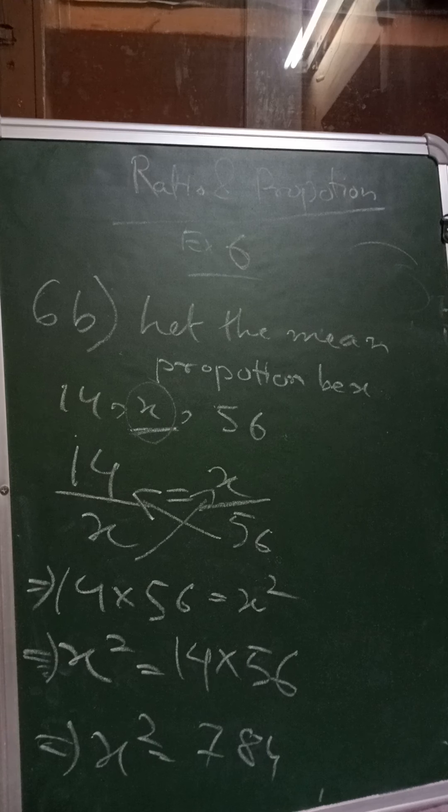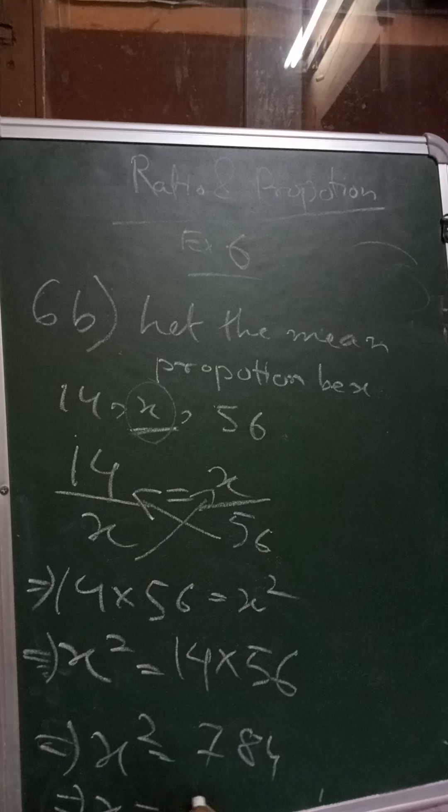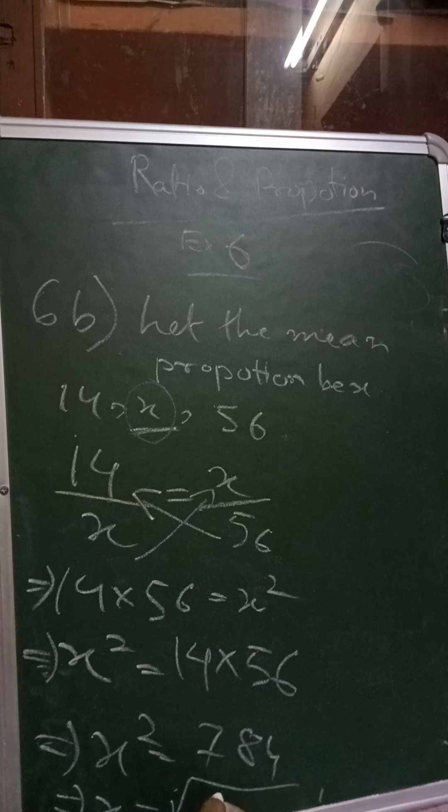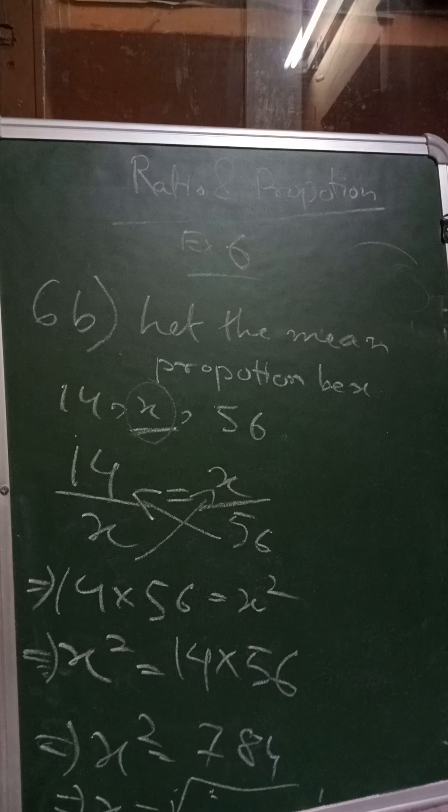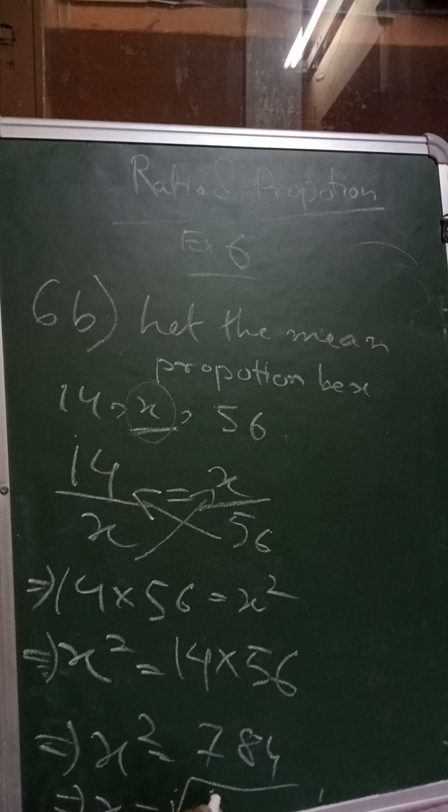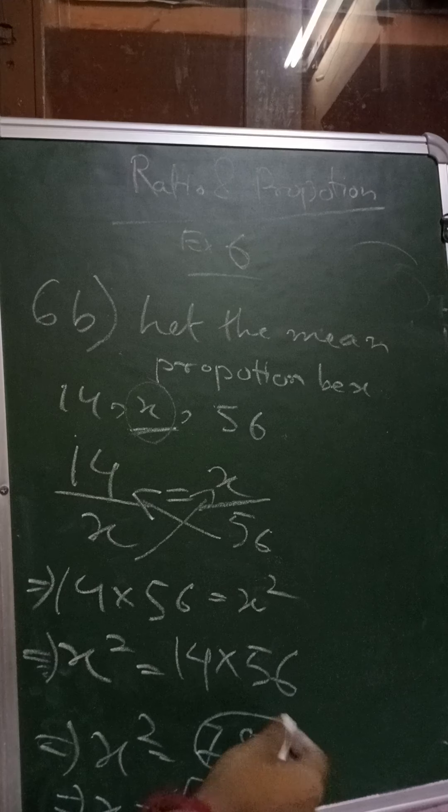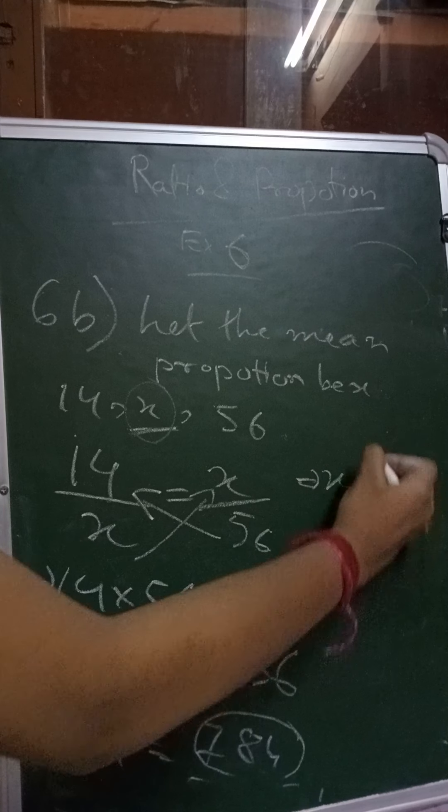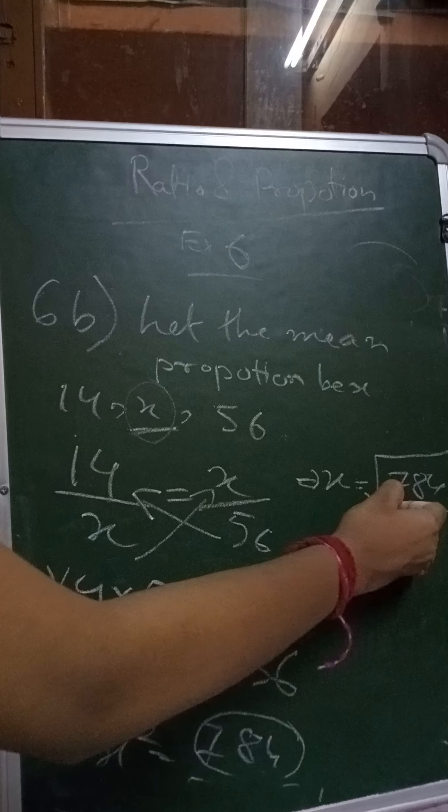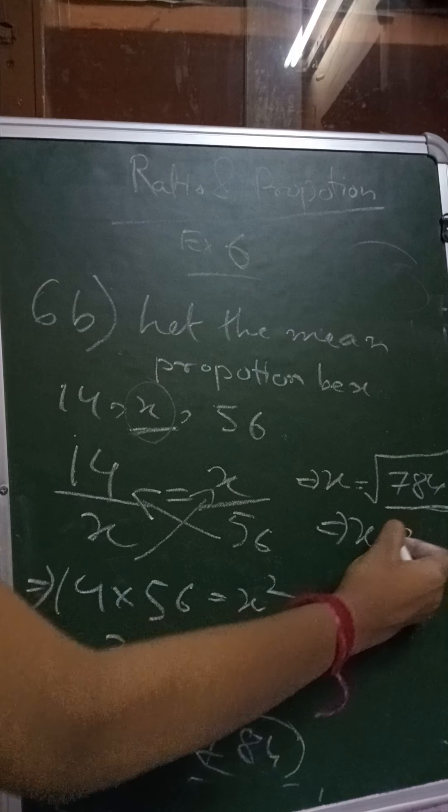Now we need to find the root of 784. So what is the square root of 784? It's 18, I think it's 18. No, 18 is 324. Now I think it's 28. So if you do the prime factorization of 784, you will get x equals the square root of 784. And if you do the prime factorization of 784, you will get the value of x as 28.